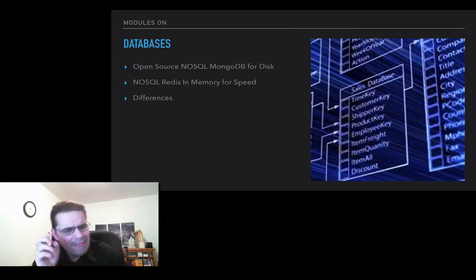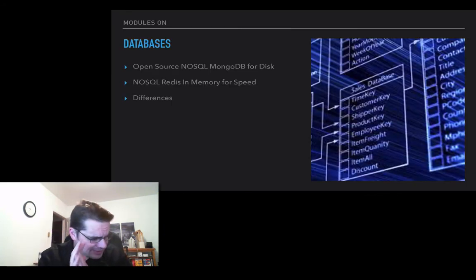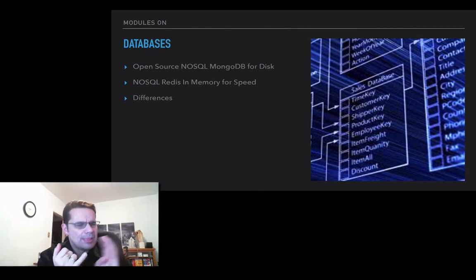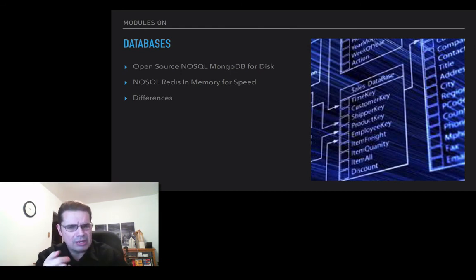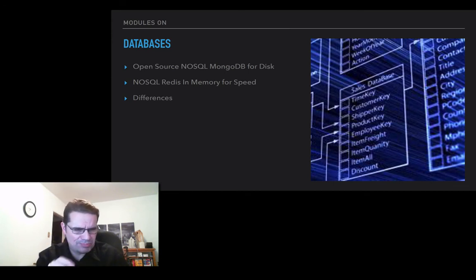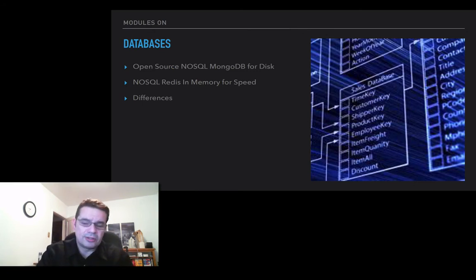Let's talk about databases. I've studied database after database — commercial ones, all the expensive ones, and all the open source ones. The two I'm really wanting to focus on and actually implement with my live trading system are NoSQL databases. We're going to talk about MongoDB, which we can use for disk storage and use like a typical relational database. On top of that, we're going to talk about Redis — specifically the in-memory component — and we're going to use that for speed. It's ranked as one of the fastest databases in the world.